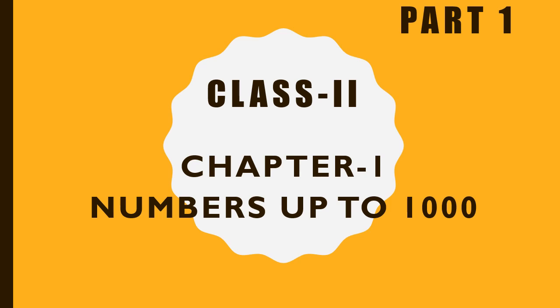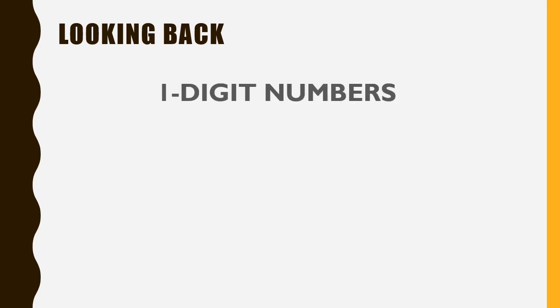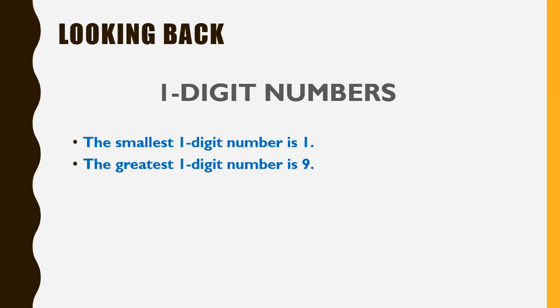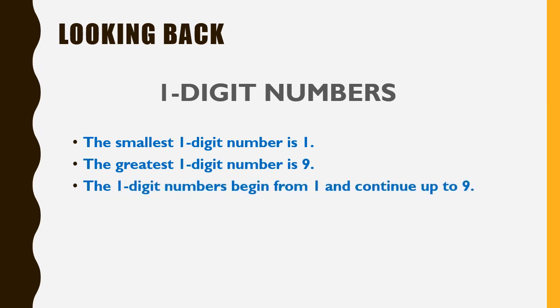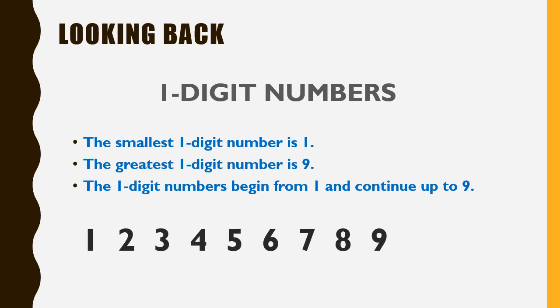In this chapter, we will discuss the concept of 3-digit numbers. Before we start, let's take a quick recap. In class 1, you all have studied 1-digit numbers and 2-digit numbers. In 1-digit numbers, the smallest is 1 and the greatest is 9. The 1-digit numbers begin from 1 and continue up to 9.